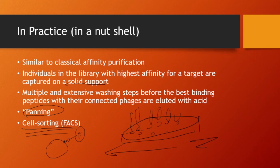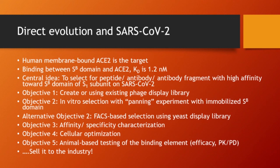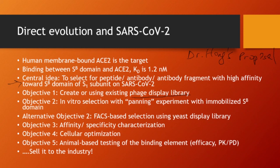This is not rocket science — it's very manageable at any stage in your pharmacy career to understand this concept, and that's why I'm presenting it. Coming to almost the last slide — it's a little over an hour now — hang in there and we'll wrap up with another exciting Dr. Hong's thinking or proposal. The same idea: we have ACE2 as a target. The central idea is to select for a peptide, antibody, or antibody fragment with high affinity toward the SB domain.